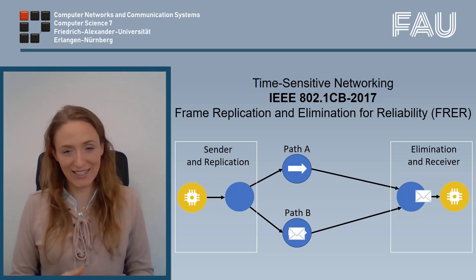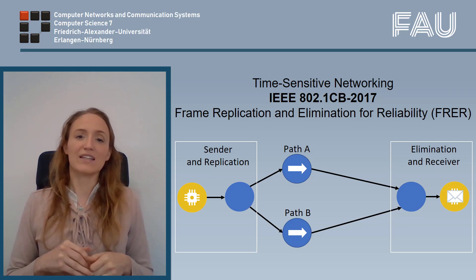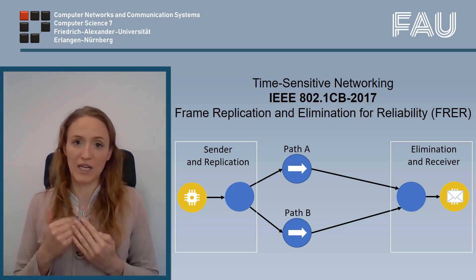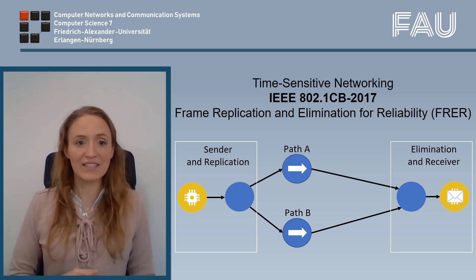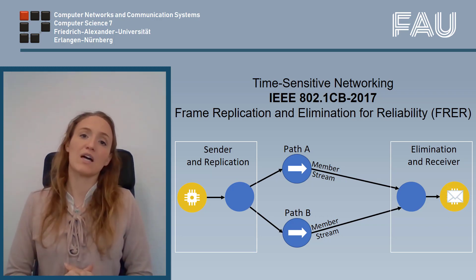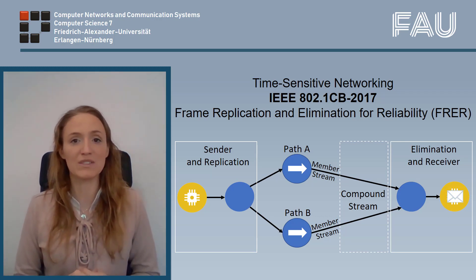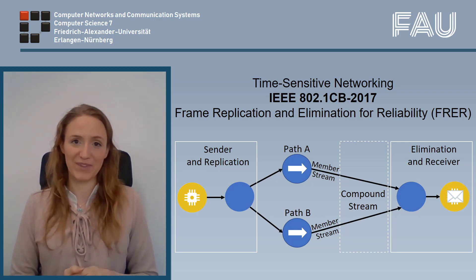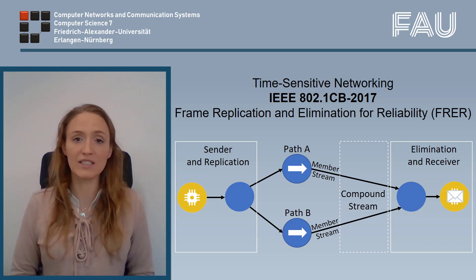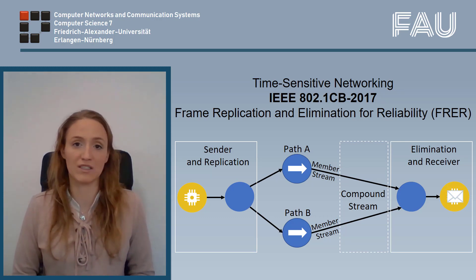FRER should be configured to forward new packets, because that's what we want to receive, but also to eliminate duplicate packets, because the underlying network operation should not be visible to the application itself. In this context, split flows on disjoint paths are called member streams, whereas the group of member streams is called one compound stream. Duplicates in compound streams, between the member streams, are identified using a so-called sequence recovery function.